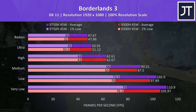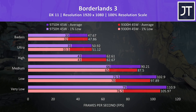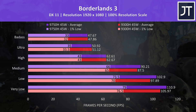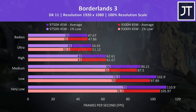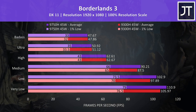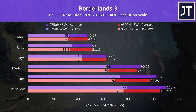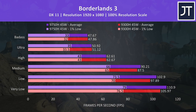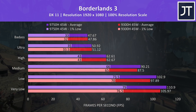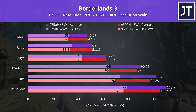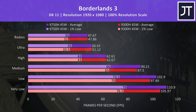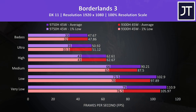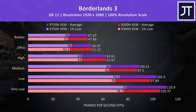Borderlands 3 was tested with the built-in benchmark and follows the same pattern as many other titles tested, in that the results are quite close together, especially at higher settings. The top 3 settings have basically the same average FPS with only minor gains to 1% low results, however the i7 was less than 5% faster at low settings.